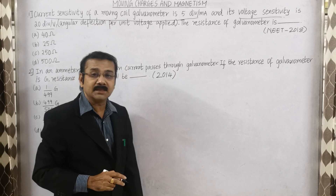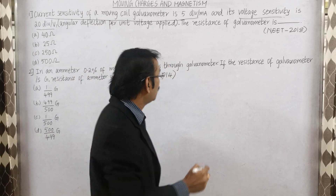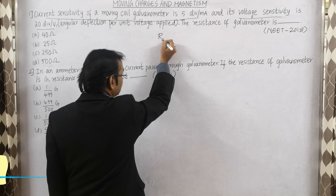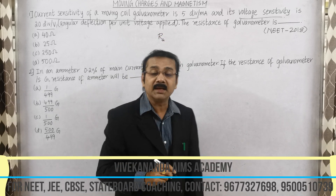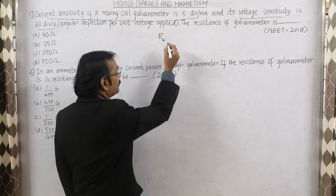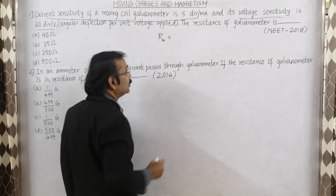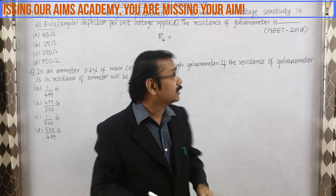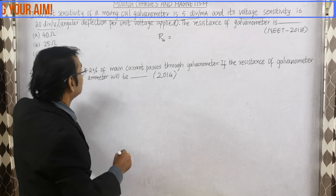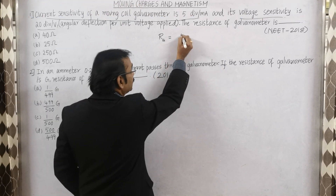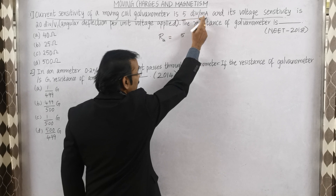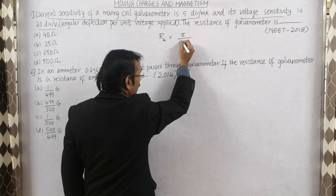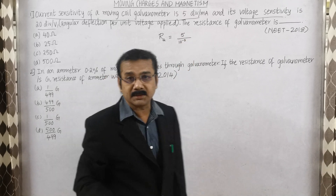Now the question asks us to find RG. To go with the shortcut method, write down the symbol RG, which is nothing but the resistance of the galvanometer. The resistance of the galvanometer RG will be equal to — we have two numbers: one is 5 and the other is 20. Just divide the two numbers. We put 5 here, given as divisions per mA, so we write 5 divided by 10 to the power minus 3.